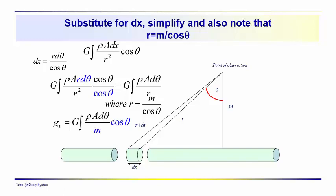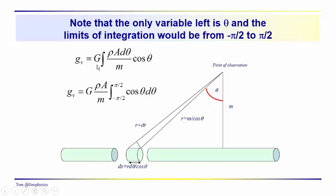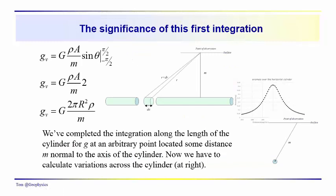After some rearranging to get m back into the equation, the only variable left is d-theta with cosine of theta. So we have the vertical component for this configuration where m is not necessarily a point directly above the cylinder. We have G times density times the cross-sectional area over that distance m, times the integral from minus pi over two to pi over two of cosine theta d-theta.